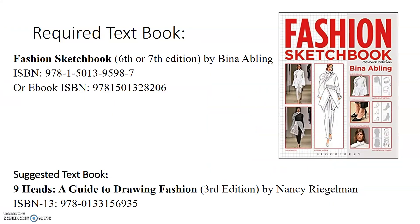The required textbook is Fashion Sketchbook by Bina Abling. We used the sixth edition last year, but the seventh edition is out now and is cheaper — about $60 on Amazon. The student bookstore may have it but it's likely more expensive there, so buy it wherever you can get it cheapest. You'll have no problem reselling it when you're done as it's a popular book. I also suggest the book Nine Heads, which I show in the video tutorial — it's a nice reference when you're first learning fashion illustration, and again you can sell it when you're done.